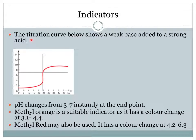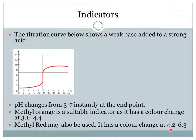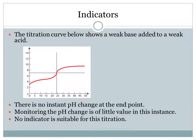Now we're looking at a weak base with a strong acid — the reverse. In this case the pH change occurs below 7, changing instantly between pH 3 and 7 at the end point. Suitable indicators here include methyl orange, which changes between 3.1 and 4.4, or methyl red, which changes between 4.2 and 6.3. Either of those indicators is appropriate, going from red to yellow as the solution goes from acid to base.